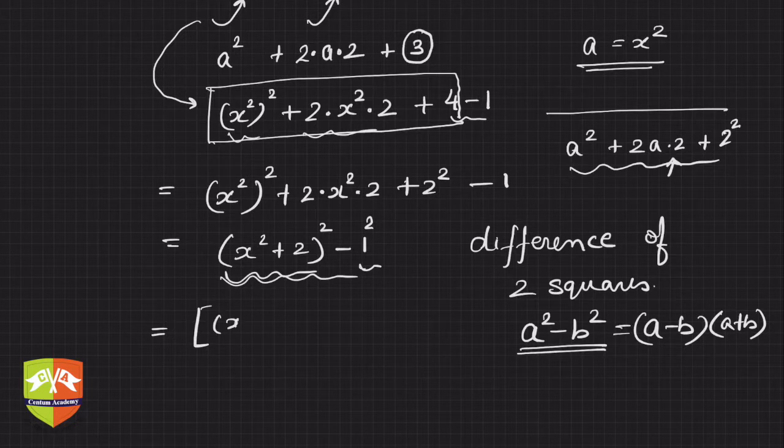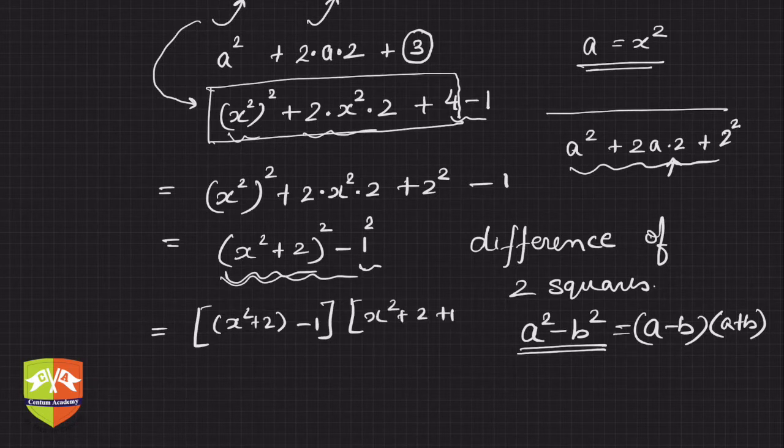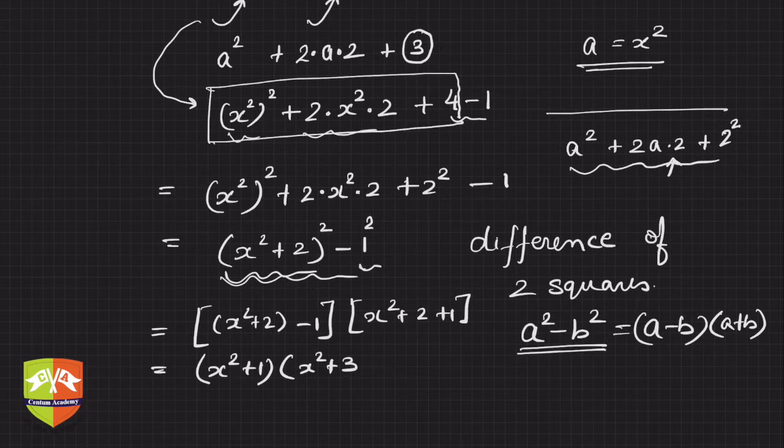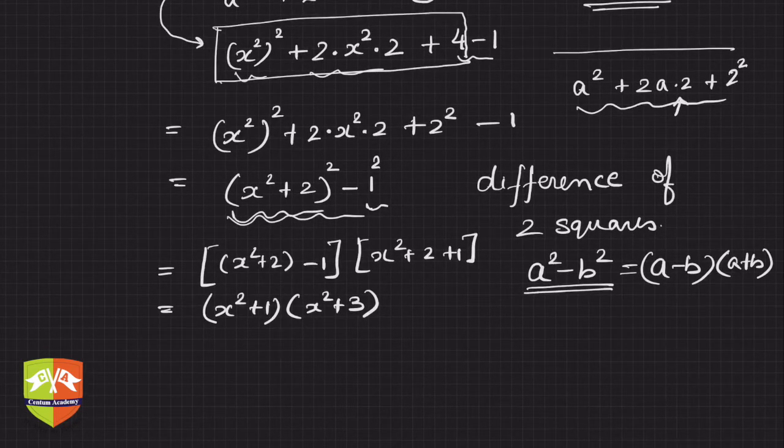Hence we can write (x square plus 2 minus 1) and here it will be (x square plus 2 plus 1). So x square plus 1 and x square plus 3. If you see, we got (x square plus 1) times (x square plus 3). These are the two factors.